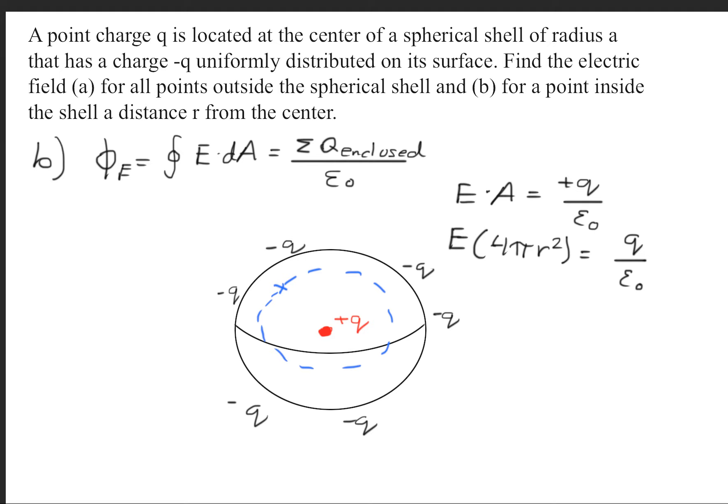Let's isolate the electric field, so we get Q over 4 pi epsilon naught R squared.